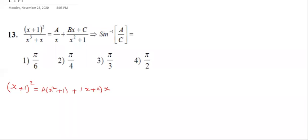What is a? Expand x plus 1 whole square: x square plus 2x plus 1. On the right hand side: Ax square plus A, plus Bx square, plus Cx.